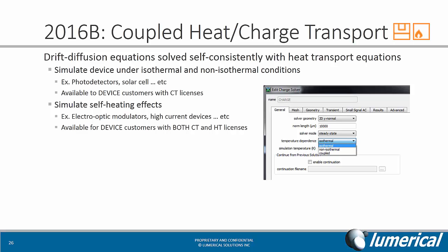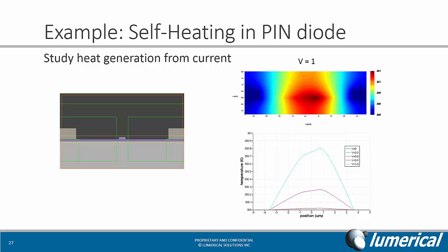Both of these modes are available under the edit window of the charge transport solver. For the isothermal and non-isothermal mode, you only need the charge transport license. But in order to access the coupled heat charge transport mode, you'll need both the charge transport license as well as the heat transport license. The example shown here is the PIN diode, where we can look at heat generation from current with no other sources of heating. On the right side you see the temperature map at V equals 1, and if we plot the temperature across a line in the middle, we can see how much the temperature rises for different voltages.